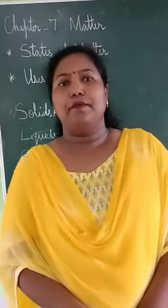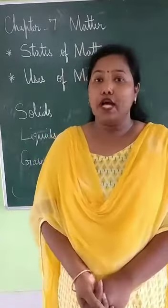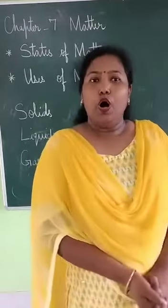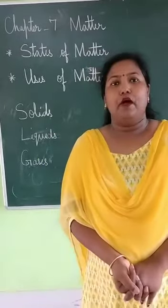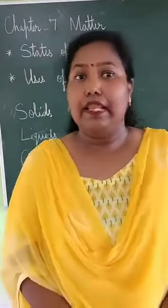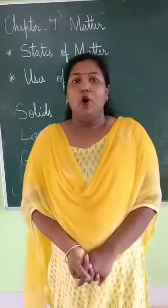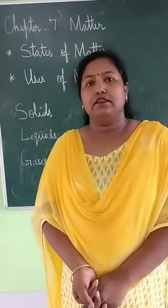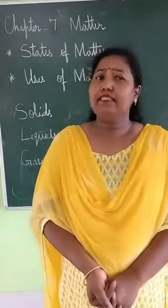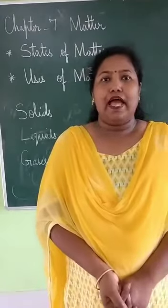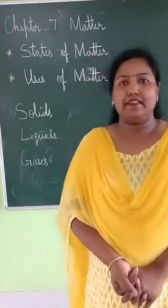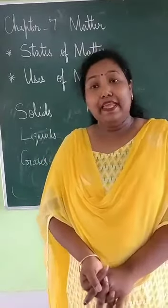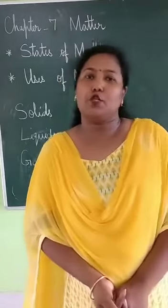Dear students, there are a number of things present around us. Some of them are natural and some are manmade. All manmade things are non-living, but natural things can be either living or non-living. All these things are different in shape, size and colours. But one thing is common — all these things occupy space and have mass. Anything that occupies space and has mass is called matter.